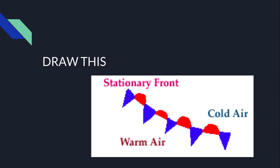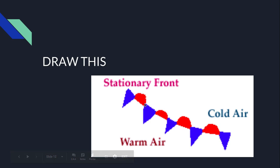A stationary front looks like a mix between a cold front and a warm front. You have little icicles on one side pointing the direction the cold air wants to go, and little warm semi-circles on the other side pointing the direction the warm air wants to go. They're at this border — they're not moving. That's what stationary means.